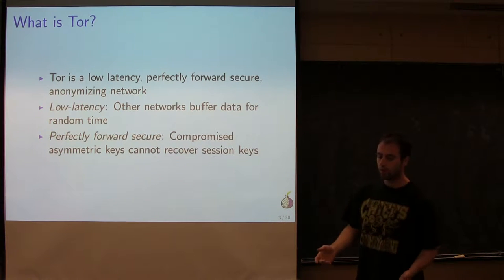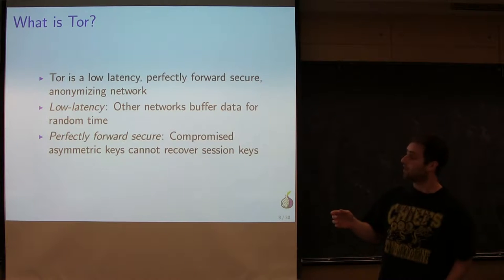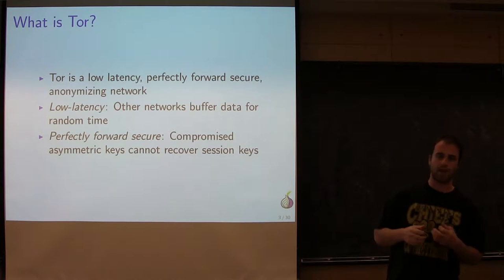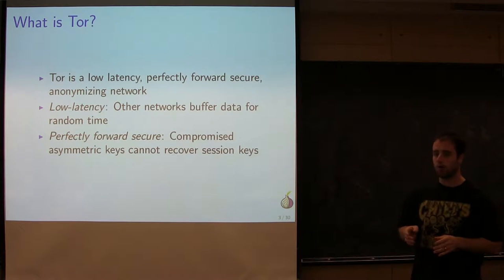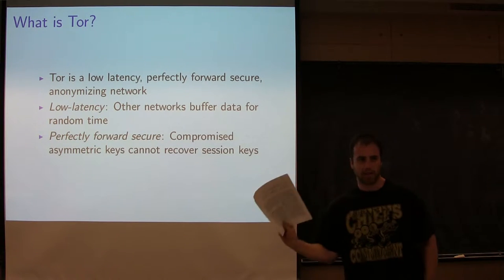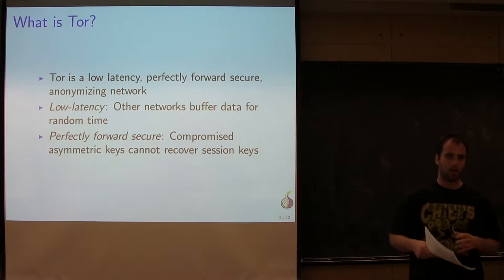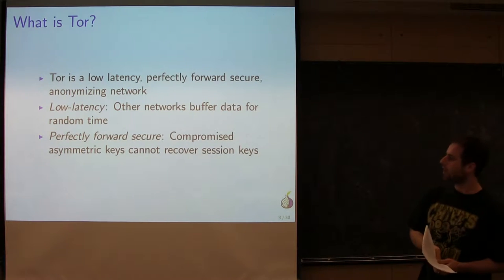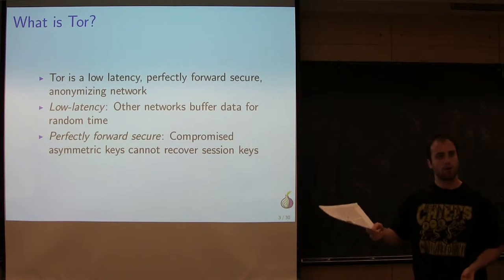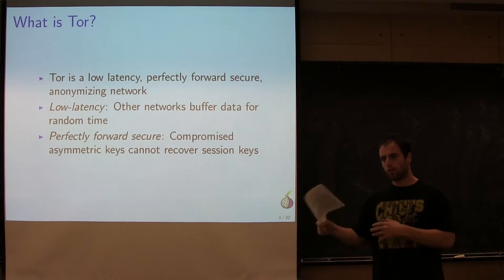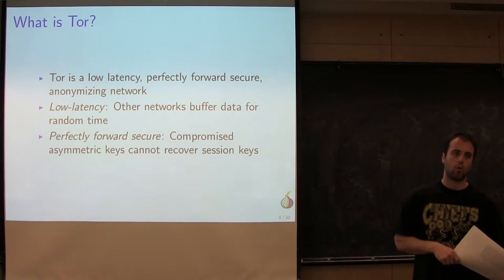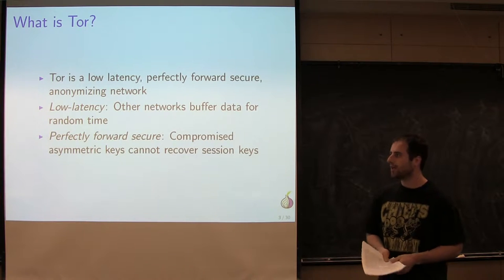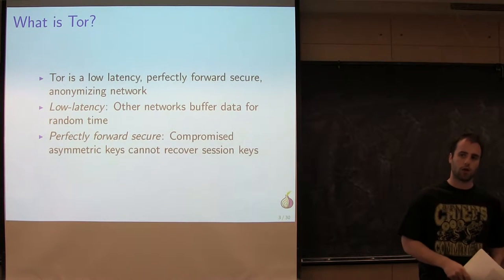In a sentence, Tor is a low-latency, perfectly forward-secure, anonymizing network. Low latency means it doesn't buffer your traffic randomly to help anonymize you — some related projects reorder packets and hold onto them for random amounts of time. Perfectly forward secure means that if the asymmetric public and private keys are compromised down the road, data you've already sent over the Tor network is still secure.